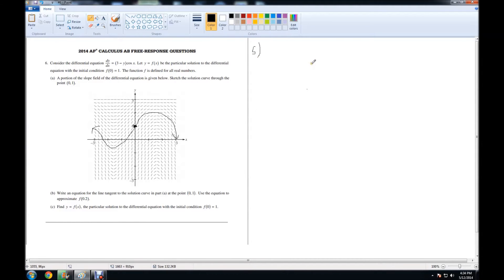Write an equation for the line tangent to the solution curve in part A at the point (0,1). Use the equation to approximate f(0.2). We need the point—we have the point (0,1). All we need is the slope to find the line. So they give us a point 0 and 1, which is an x and y value. So let's go ahead and plug it into the derivative to find our slope.